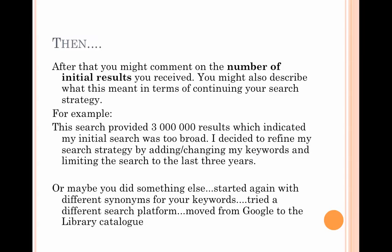There are other things you might do with your information literacy skills. You might use different synonyms for your keywords, or try a different search platform. The problem with Google is that you're always going to get millions of broad results no matter what you put in. You might decide that's not helpful and it'll take too long to sift through, so you'll go to the library catalogue which might give you more limited and focused results. You need to describe that process in your search strategies.